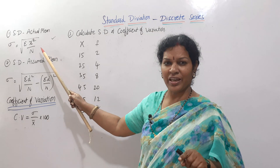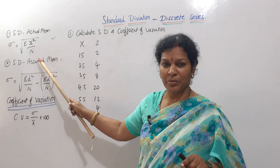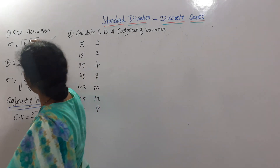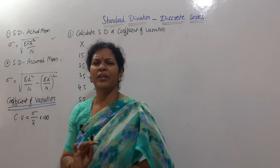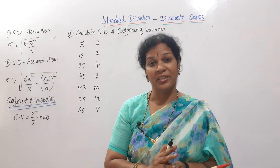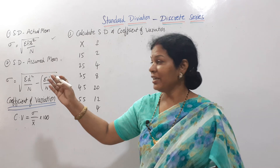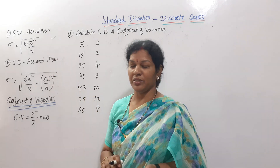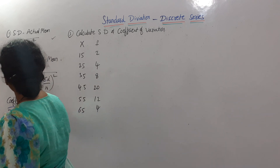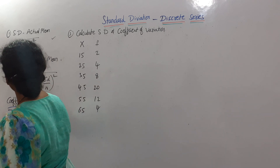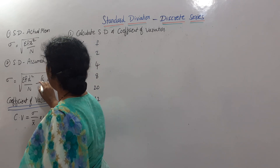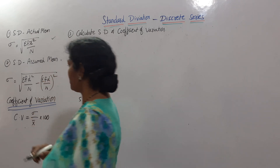For individual series using actual mean, rho is equal to sigma x-square by n. For discrete series, we add frequency: sigma f times x-square by n. In the same way, for the assumed mean formula, instead of sigma dx, we use sigma f·dx and sigma f·dx-square.